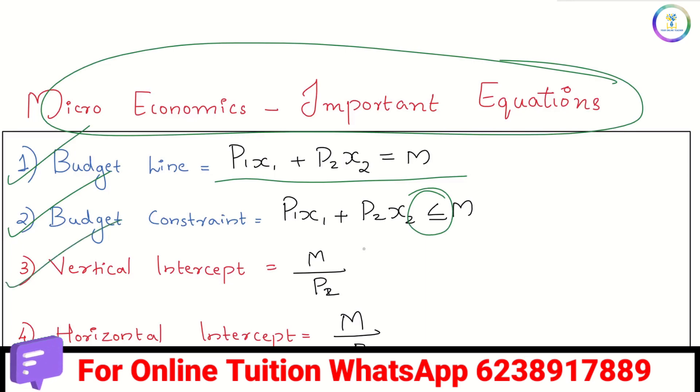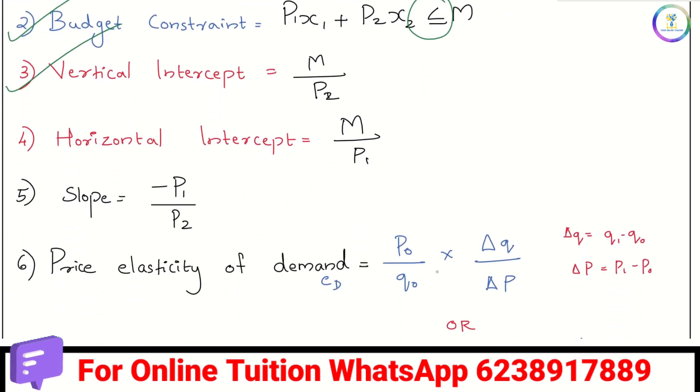Then the vertical intercept is m by p2. The horizontal intercept is m by p1. The slope is minus p1 by p2.